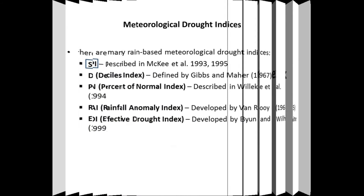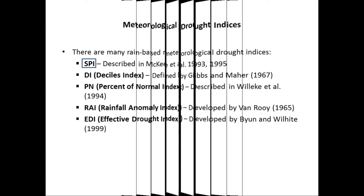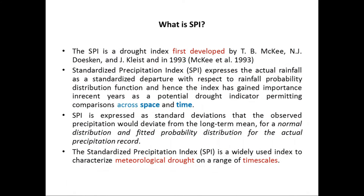There are many area-based meteorological drought indices, such as SPI, the De Martonne Aridity Index, the Percent of Normal Index, the Rainfall Anomaly Index, and the Effective Drought Index. These indices are rain-based meteorological drought indices.